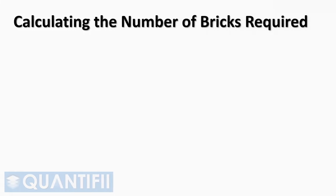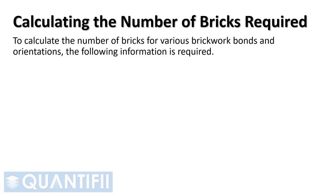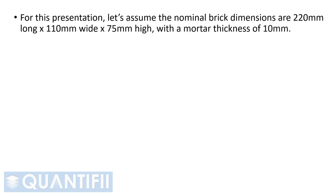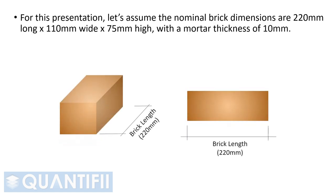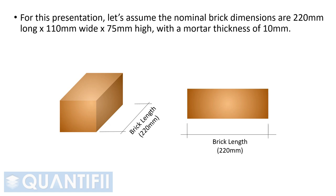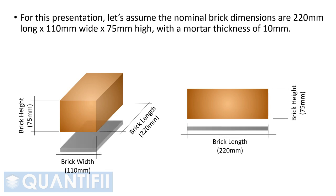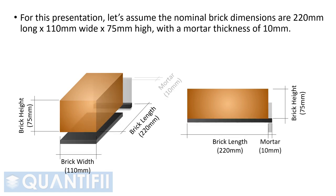To calculate the number of bricks for various brickwork bonds and orientations, the following information is required: the dimensions of the brick — that is, the length, width, and height — and the thickness of the mortar joints. For this presentation, let's assume the nominal brick dimensions are 220 mm long by 110 mm wide by 75 mm high, with a mortar thickness of 10 mm.